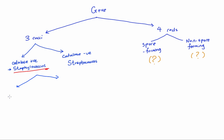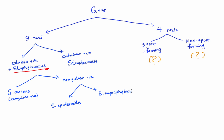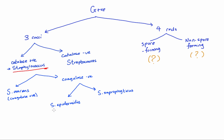Staphylococcus has three medically important species. The most well-known is Staph aureus, and this is coagulase positive. The other two are coagulase negative: Staph epidermidis and Staph saprophyticus. To differentiate between these two, we use the novobiocin test. Staph epidermidis is sensitive to novobiocin, and Staph saprophyticus is resistant to it.